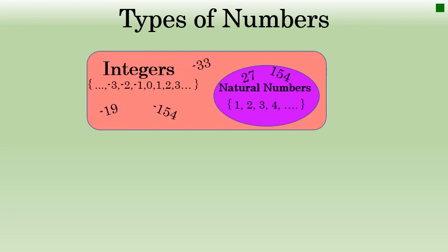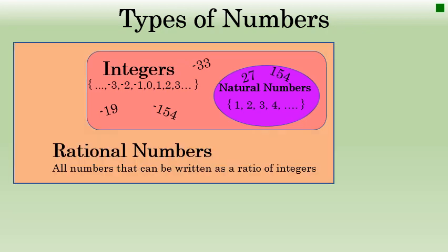The integers and natural numbers are both subsets of rational numbers. The mathematical definition for the set of rational numbers is all numbers that can be written as a ratio of integers. Basically, this means any number that can be expressed as a fraction is a rational number. All natural numbers and integers are rational because they can be expressed as fractions.